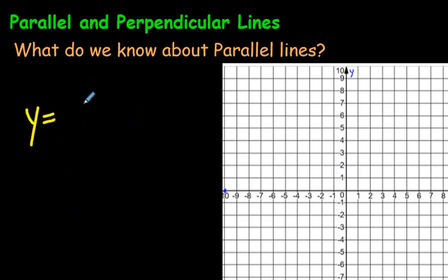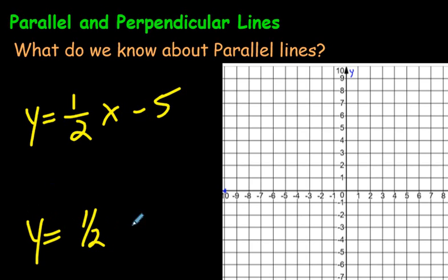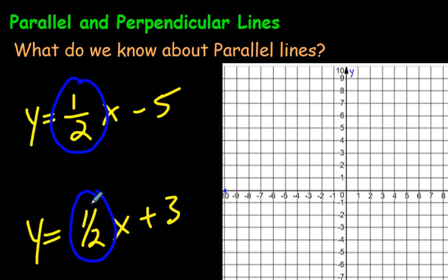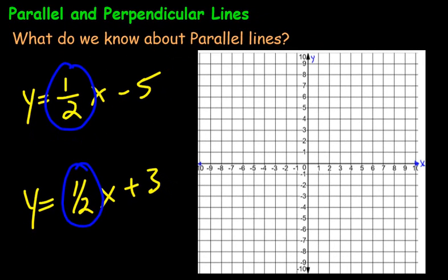So if you see y equals 1 half x minus 5, and another one down here that says y equals 1 half x plus 3, then just by looking at the slope, you know that the lines are parallel.